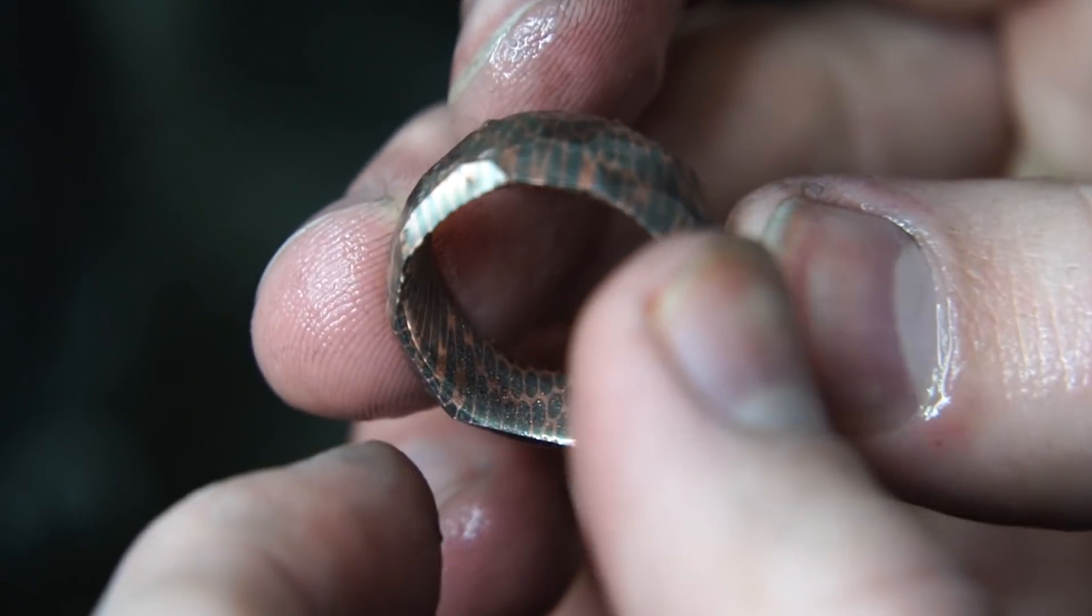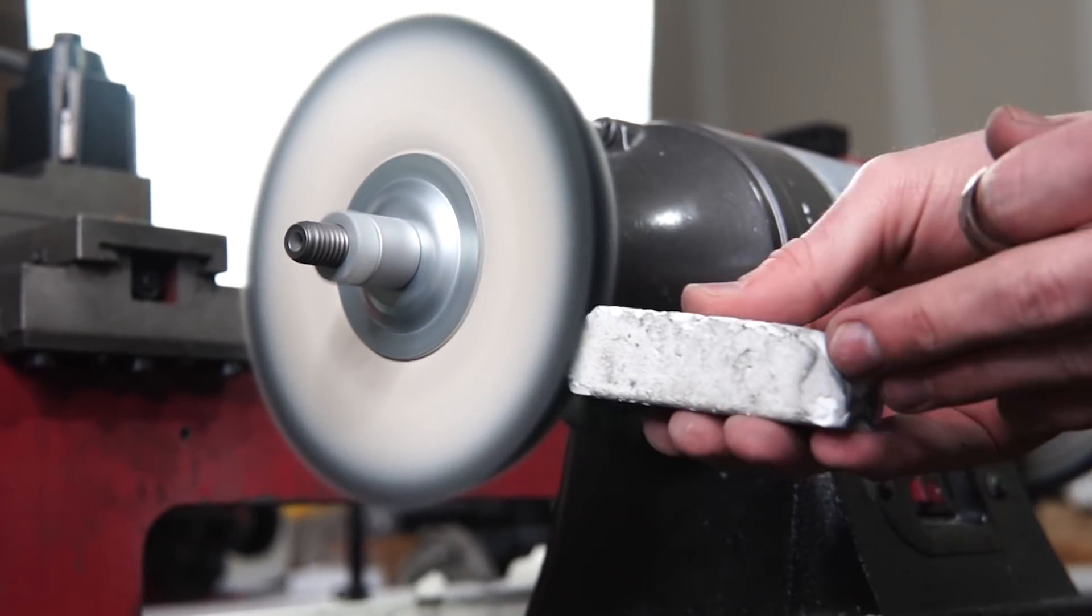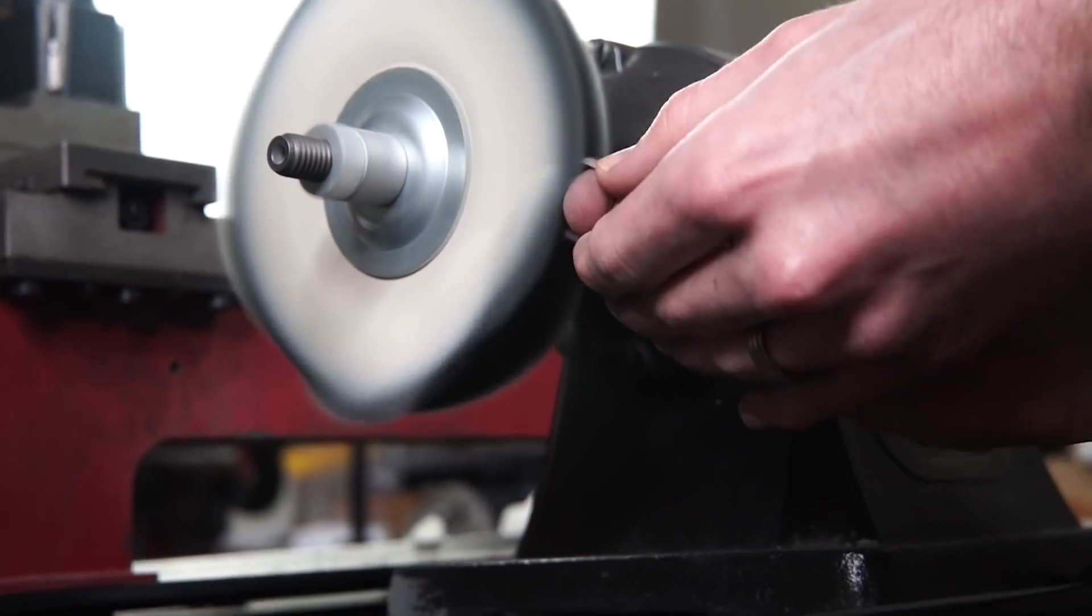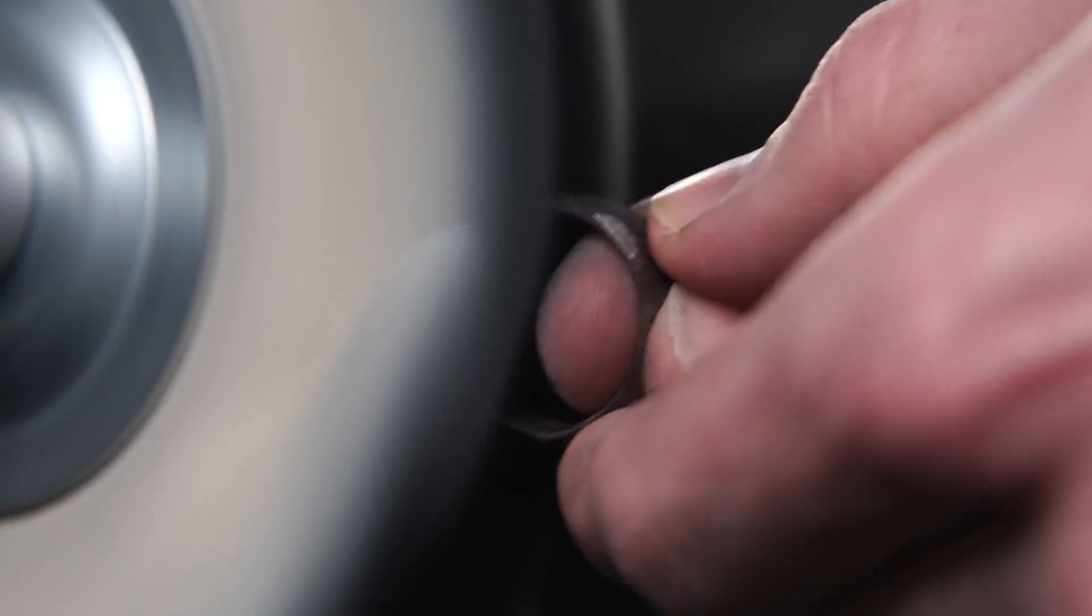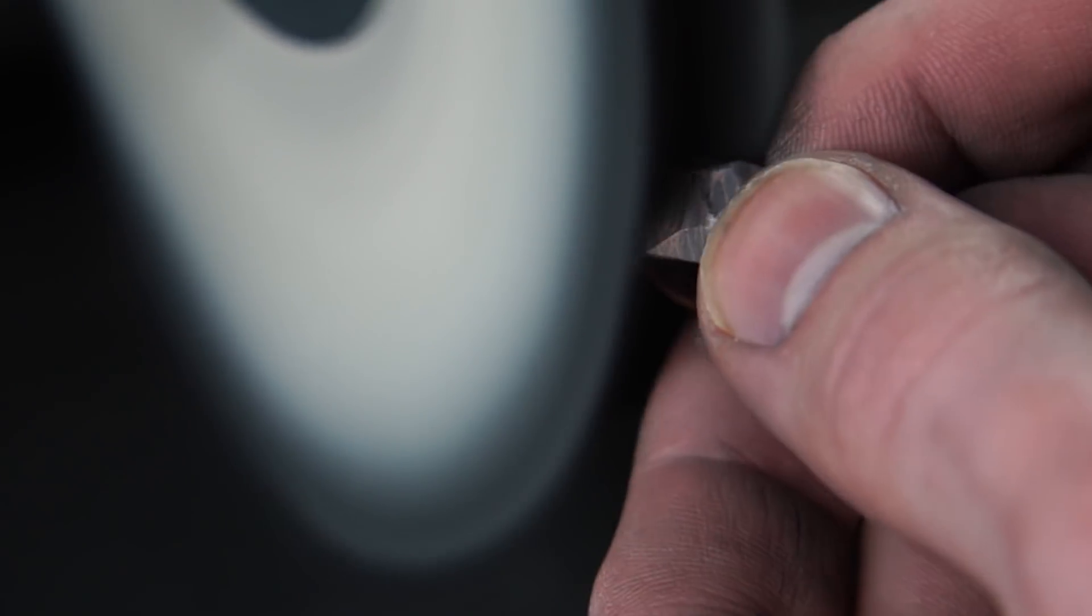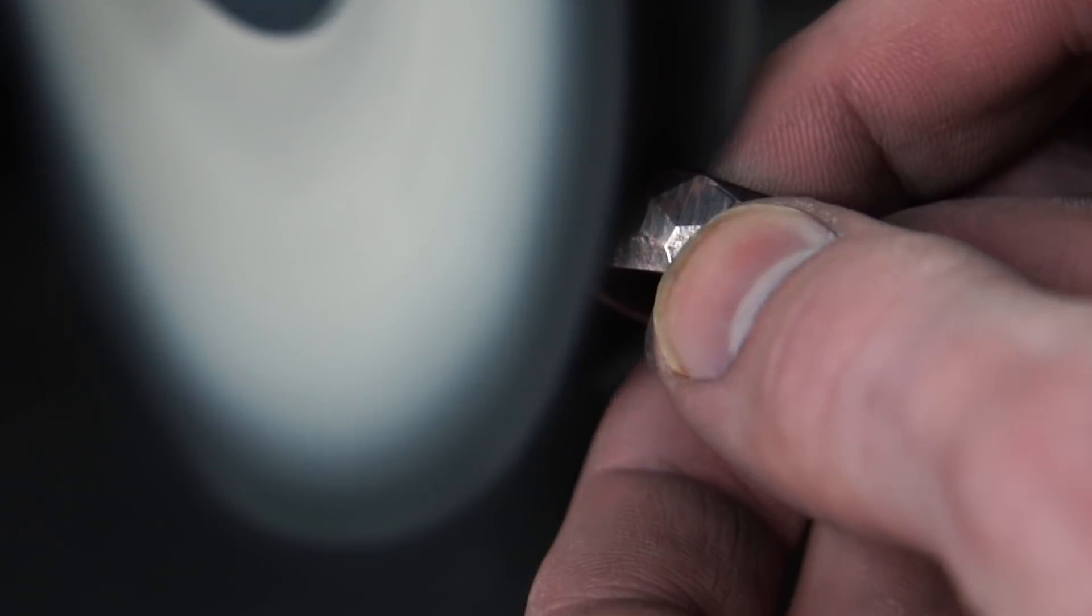I've got all of the bevels in place, it's time to go over to the buffing wheel. I'm going to spend a lot of time here, about 10 minutes, just going all over every single surface of the ring. I start out with a rougher grit polish.